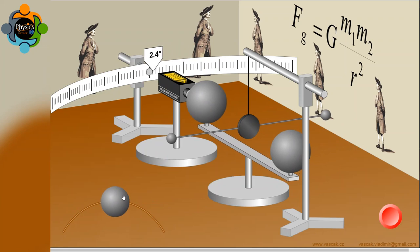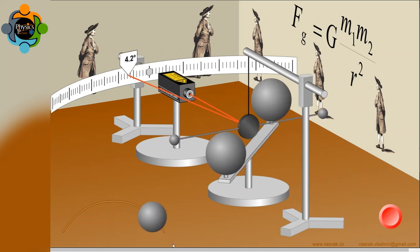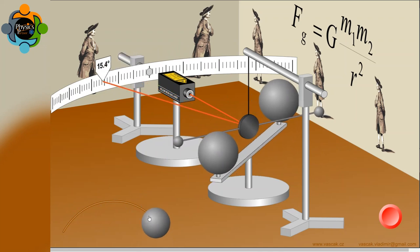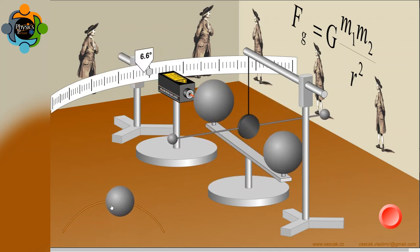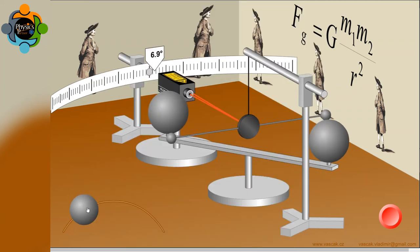Precise calculations were the crux of Cavendish's experiment. By measuring the slight twisting of the suspension wire due to gravity's tug, Cavendish used complex equations to extract the gravitational constant. This extraordinary feat required immense attention to detail and meticulous analysis, reflecting the brilliance of Cavendish's scientific mind.